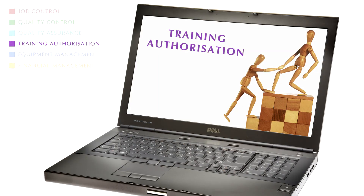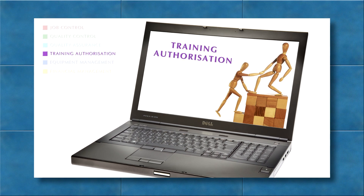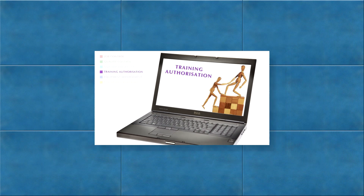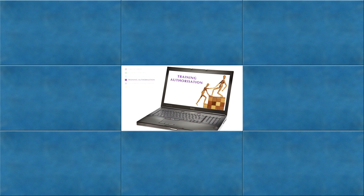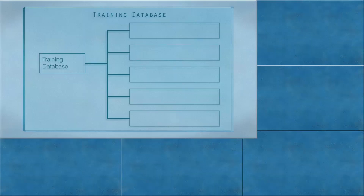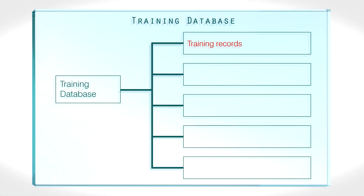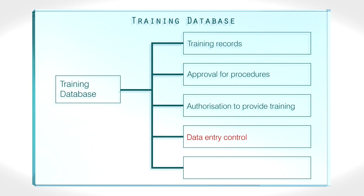Training and approvals authorisation. The training database underpins many aspects of the LIMS system in addition to basic training records, and is linked to approvals for procedures, authorisation to provide training, data entry control and ongoing competency review.